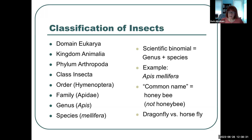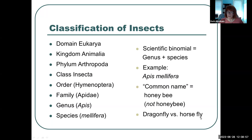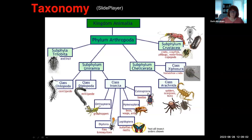The common name is what people normally use — so "honeybee." Entomologists are particular about how they write common names. To an entomologist, if the words are attached that means it's not a true bee. So dragonflies are not flies — they're completely different. Horseflies are true flies. A little entomological trivia for you.